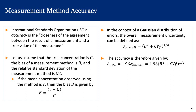If the mean concentration observed using the method is lowercase c, then the bias B is given by (c minus C) divided by C, where C is the true concentration. In the context of a Gaussian distribution of errors, the overall measurement uncertainty sigma_overall equals the square root of B squared plus Cv_t squared.